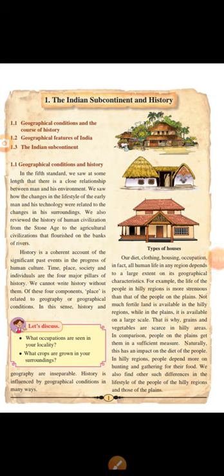Section 1.1 covers history and its pillars. What is history? History is a current account of the significant past events in the progress of human civilization. The 4 major pillars of history are: time, place, society, and individuals.